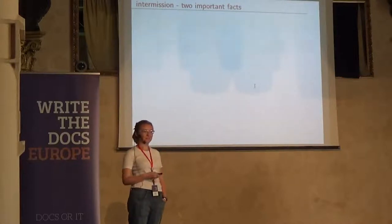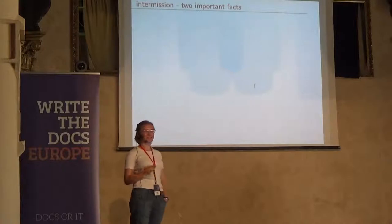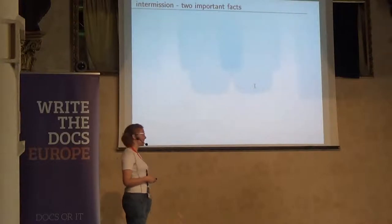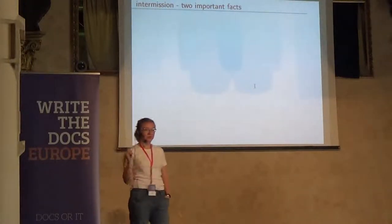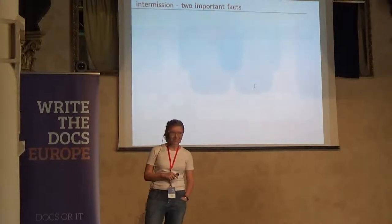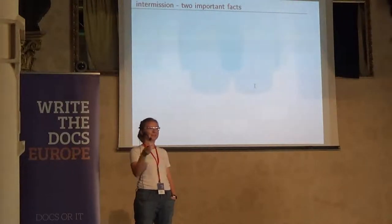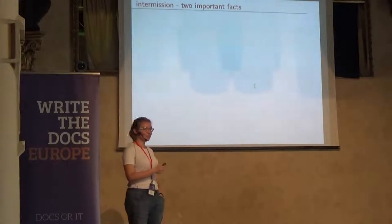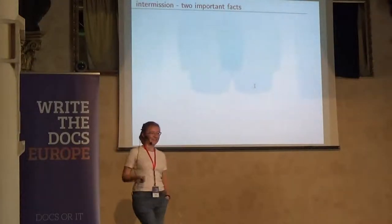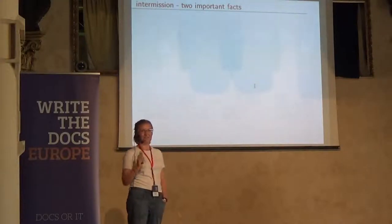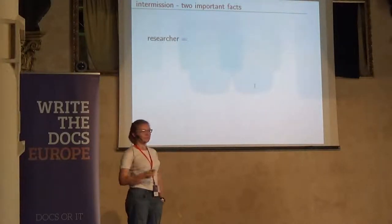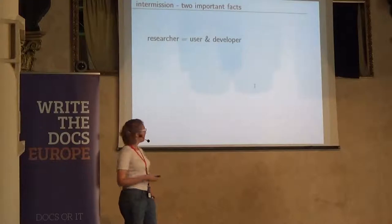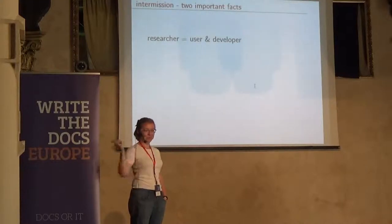I lied to you at the beginning of the presentation, because I said that some things obviously lead to documentation. Well, it's not really true in the field I work in. Have you ever worked with documentation of scientific software — software that produces science at the end? Maybe six people here. It's not as bad as I'm trying to paint, but it's not perfect. I think there are two reasons for that. The first reason is that researchers — the scientists, so me — are basically both the user and the developer of the software, and we just do everything.